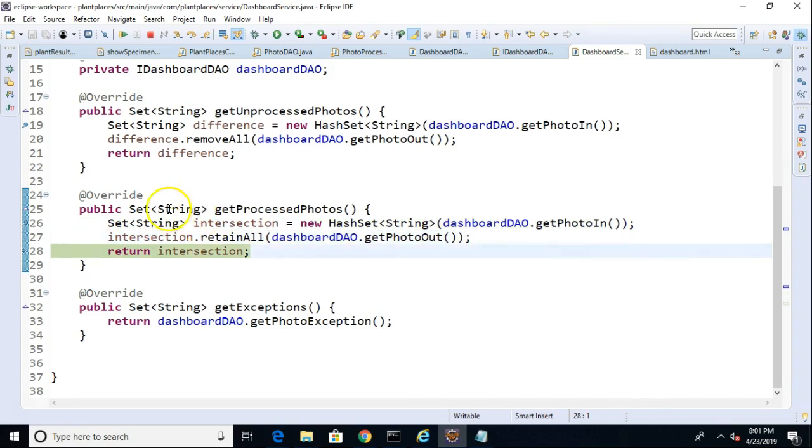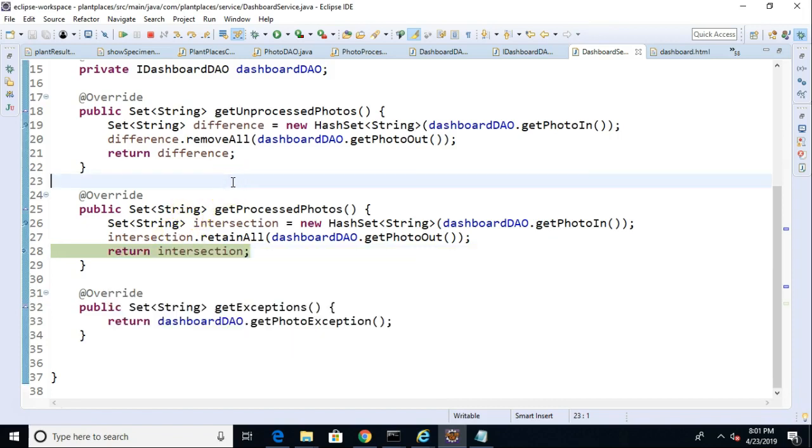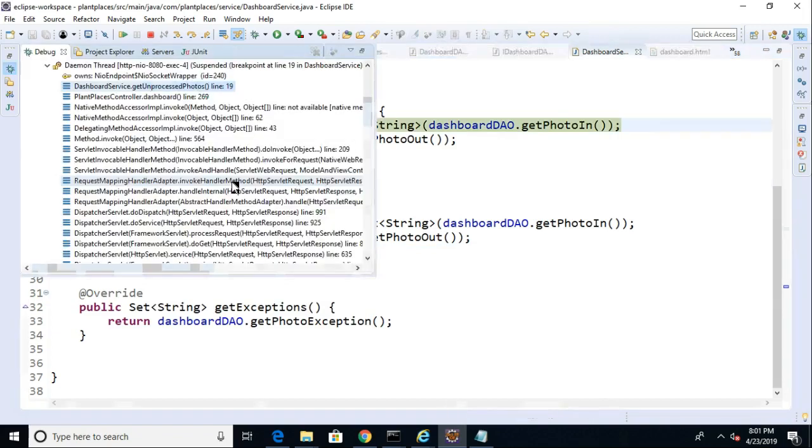So the intersection of these two should return nothing. I choose F6, F6. Let's mouse over this intersection set, and sure enough, the intersection has nothing because the item right now is only in our in queue, or our in topic, and therefore only in the in set. So I choose F8.